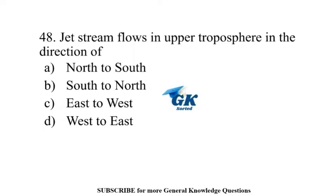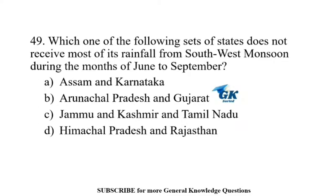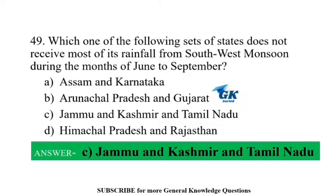Jet stream flows in the upper troposphere in the direction of South-West to East. Which one of the following sets of states does not receive most of its rainfall from the South-West monsoon during June to September? Jammu and Kashmir and Tamil Nadu.